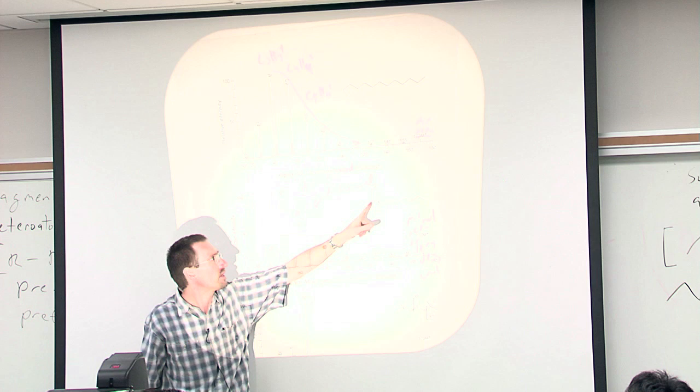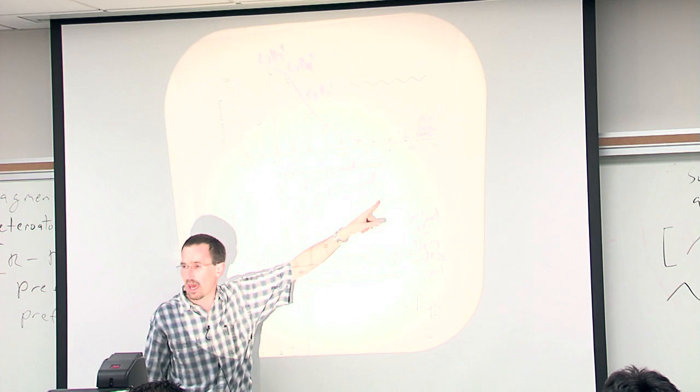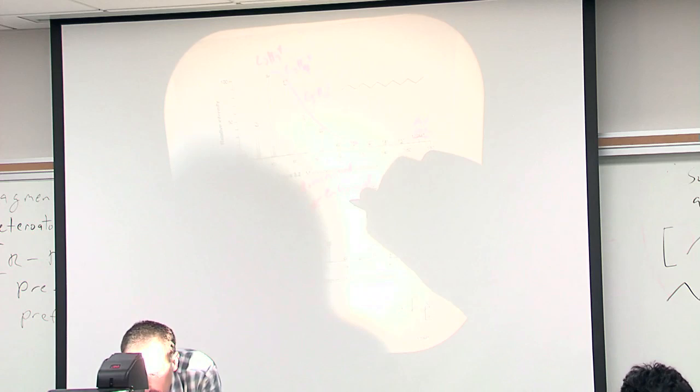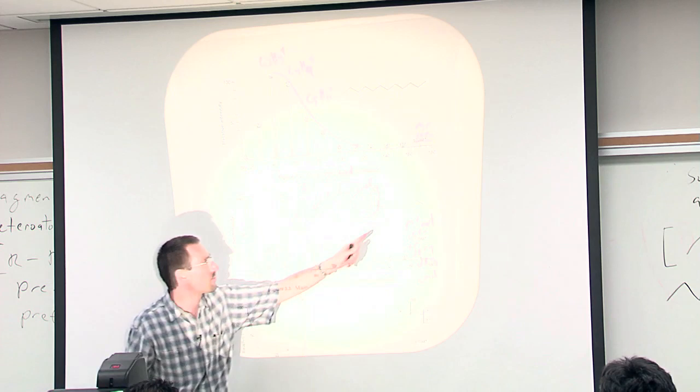Conversely there are fewer ways to break this molecule to give you a butyl carbocation because undecane had two positions you could break, whereas 4-methyl undecane has one, so your peak at 57 is diminished.